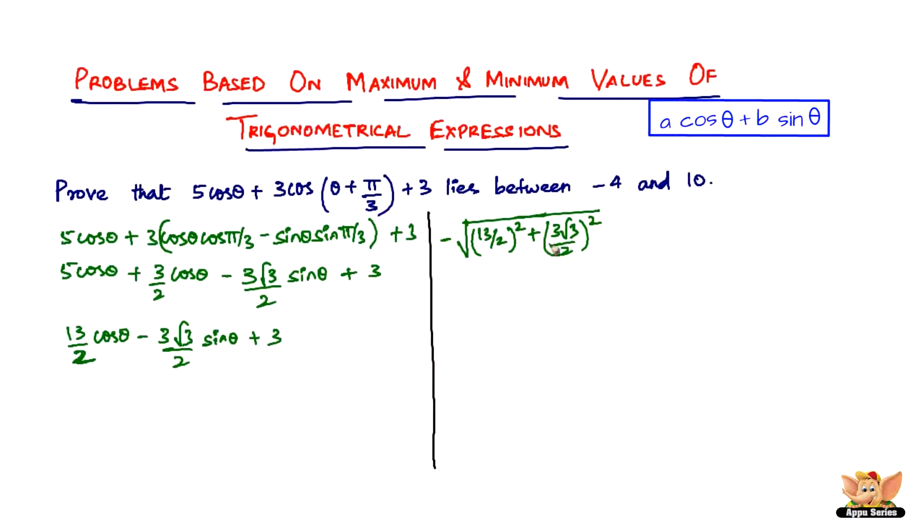Now, if this is the minimum value, this expression is going to lie between this. So it's going to be lesser than or equal to 13/2 cos θ minus 3√3 sin θ/2. But this is going to be greater than the minimum value, definitely.